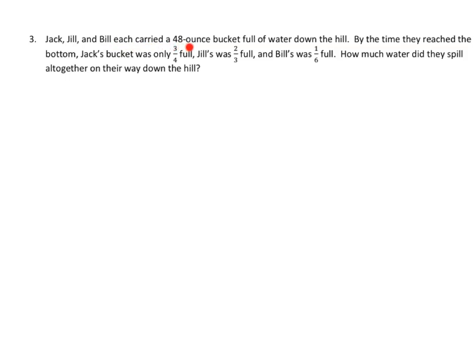Jack, Jill, and Bill each carried a 48-ounce bucket full of water down the hill. By the time they reached the bottom, Jack's bucket was only 3 fourths full. Jill's was 2 thirds full. And Bill's was 1 sixth full. How much water did they spill altogether on their way down the hill? We're going to start with a number of tape diagrams. One for Jack, one for Jill, and one for Bill. So, we have Jack. And again, the whole is 48. And his is 3 fourths filled by the time they get down the hill. So, what do we have here? If it's 3 fourths full, how much did he dump? He dumped 1 fourth. 1 fourth of 48.